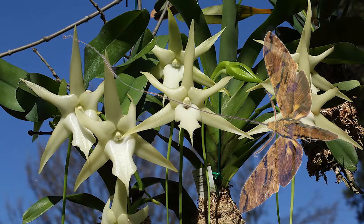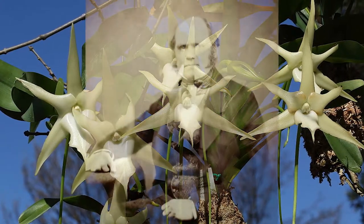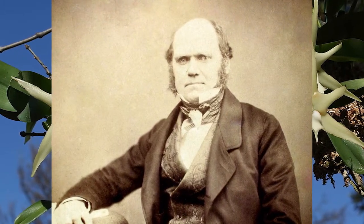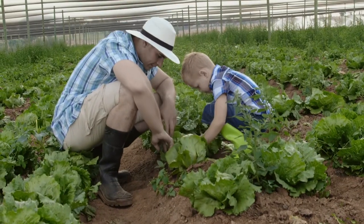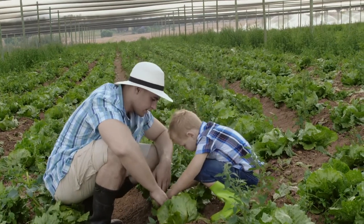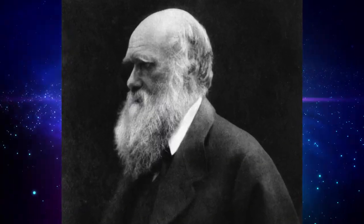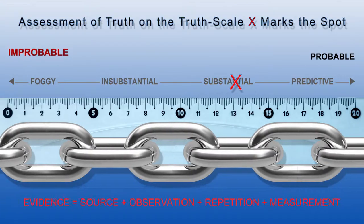It wasn't until 1992, nearly a century after Darwin's prediction, that observations were made of this elusive moth feeding on the flower and transferring pollen from plant to plant. This was observed in the wild and confirmed further with studies in captivity. Darwin's truth, like Einstein's truths, continues to make accurate predictions of the universe. This dimension of both truths assures them a high position on our truth scale.